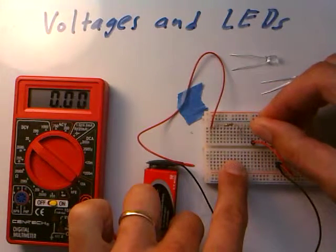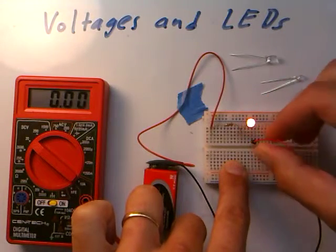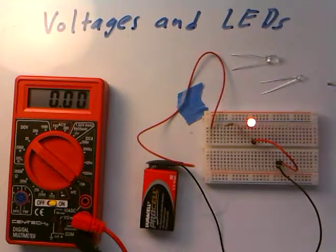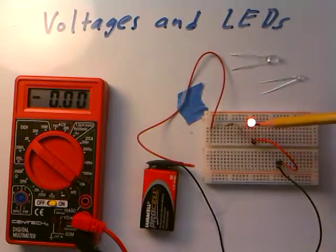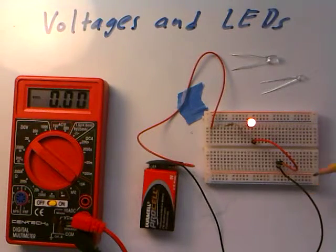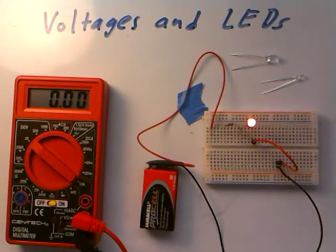And it turns out the flat edge for LEDs is marked that way because that's the side that needs to be more negative. And when I say more negative, it means it needs to point directly towards the negative terminal of the battery, which is this black wire right here, not the positive or red terminal.